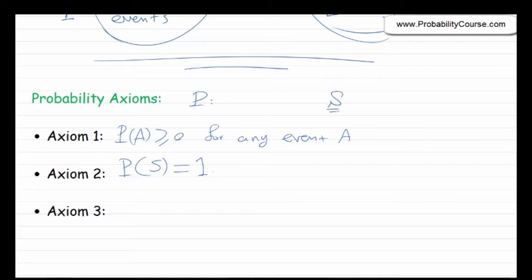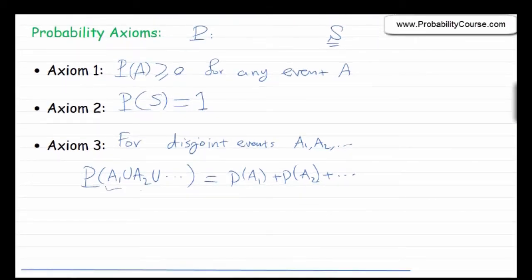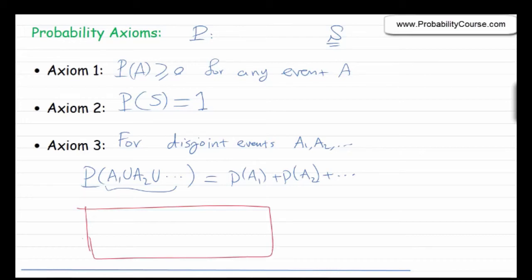The most interesting axiom is the third one, which says that for disjoint events A1, A2, and so on, the probability of their union is the summation of their probabilities. When you have two events, their union is also an event, since a union of subsets of the sample space is still a subset. So if these events are disjoint — meaning they don't have any element in common — then the probability of their union equals the sum of their individual probabilities.